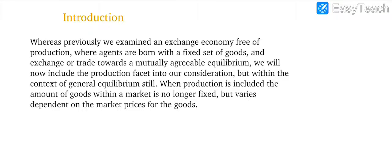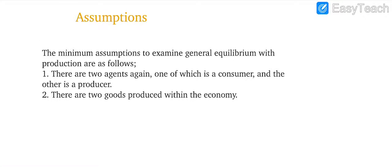What are the main assumptions of discussing general equilibrium? First, there are two agents as we discussed in the previous chapter. Similarly, here are two agents, but these two agents are not both consumers - one is a consumer and one is a producer. Second, there are two goods produced within the economy. It's a two goods, two persons model, but these two persons are not two consumers - one is a consumer and one is a producer.